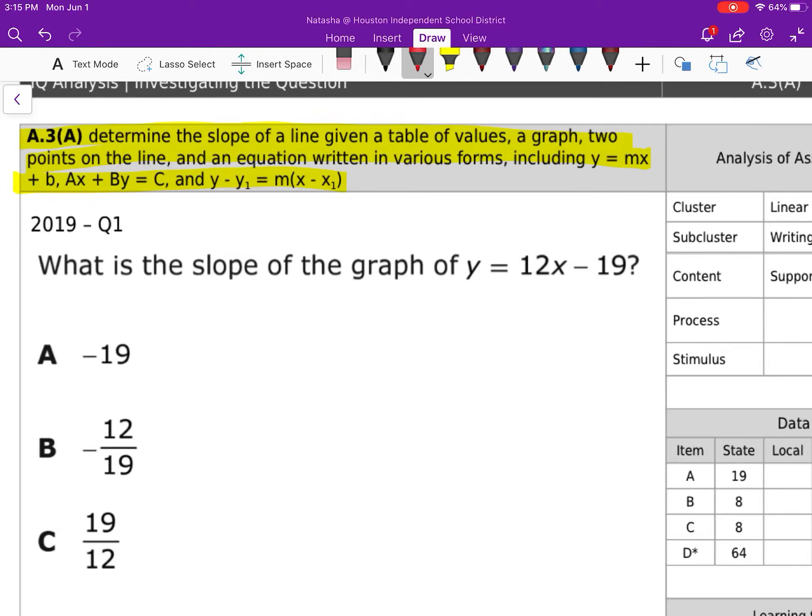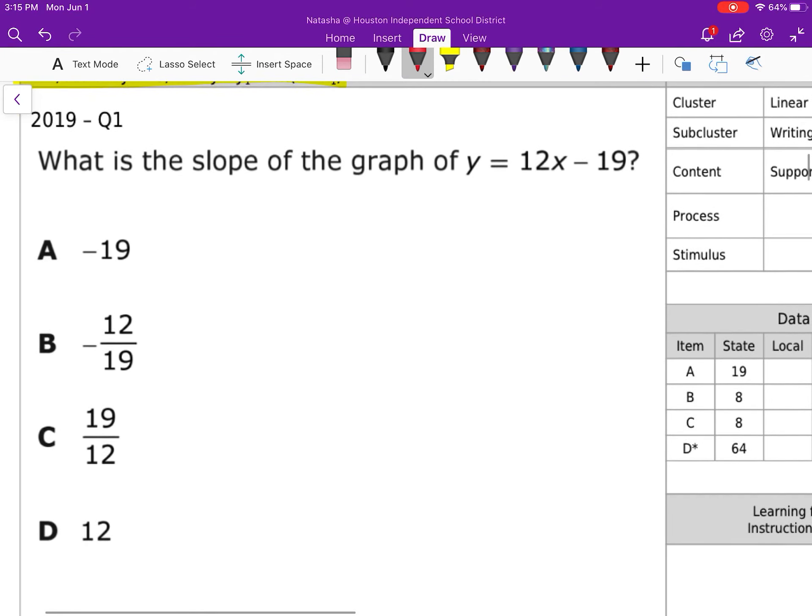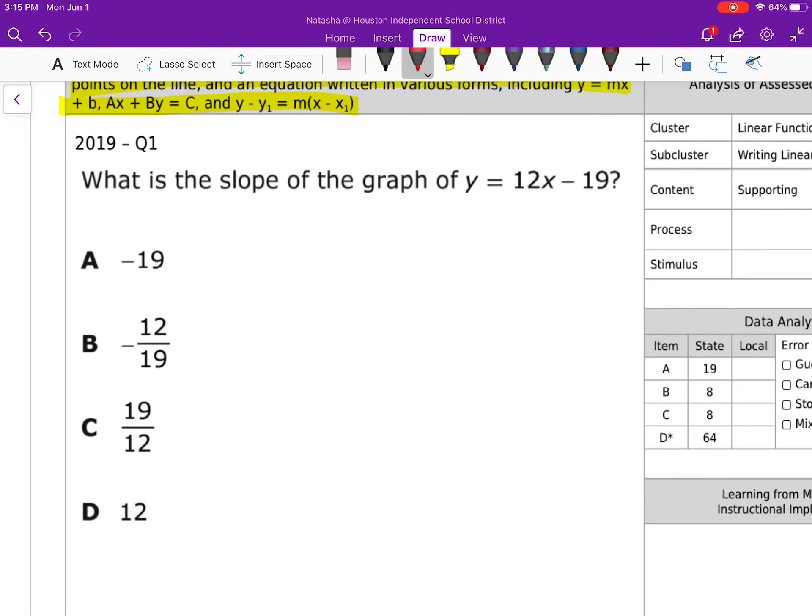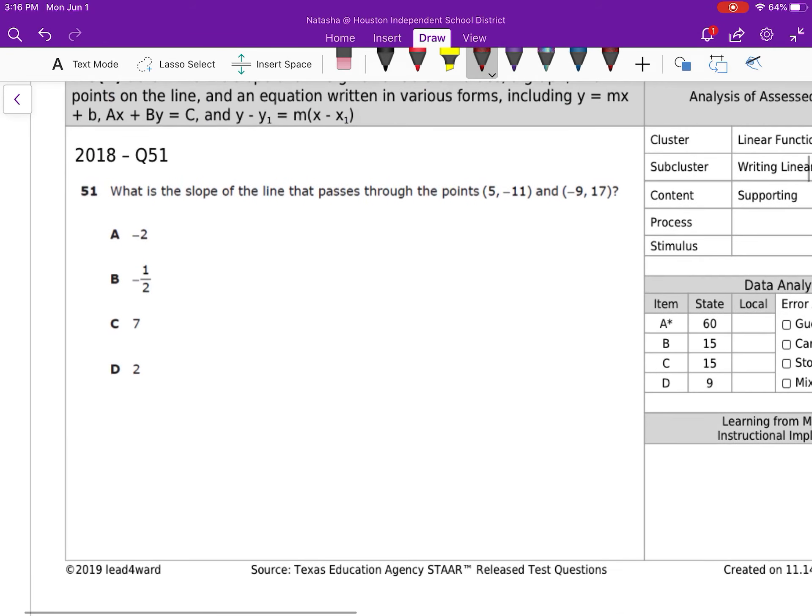Alright, so here we're going to determine the slope of a line given table values, graph, two points, equation, etc. We're given an equation in slope intercept form - this is super easy. So y equals mx plus b, which makes m our slope. Our slope is equal to negative 2, which gives us answer choice D. That one was really easy.